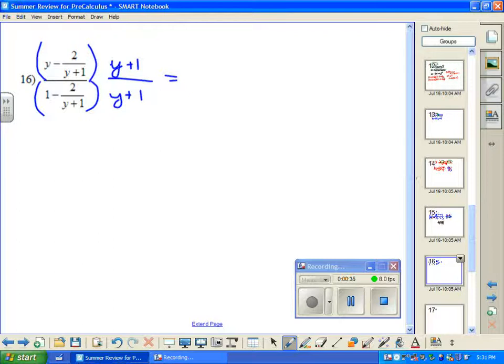And when I do that, here we'll have y times the quantity y plus 1. But notice when I multiply the y plus 1 times this second term here, that the y plus 1s would cancel. So I'll just have minus 2.